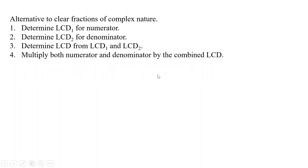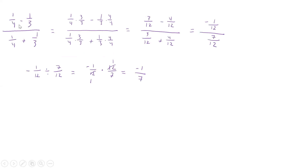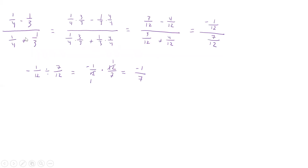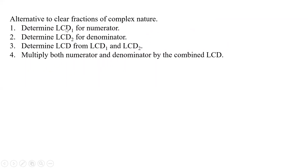The other way is to clear fractions of a complex nature. We look at the numerator and find the LCD for that numerator — here it would be 12. Then we determine the LCD for the denominator. It's not always going to be the same. So you find both LCDs, and then find the least common denominator between those two. Then you multiply both the numerator and the denominator by that combined LCD, which gets rid of all fractions, and then simplify.